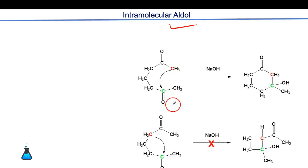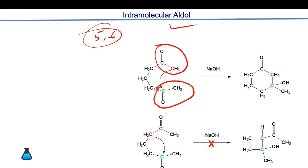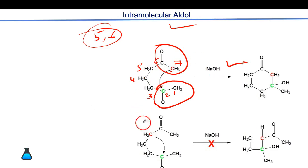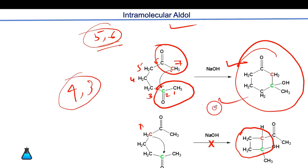In intramolecular aldol condensation, we generally prefer formation of five- or six-membered rings, and the molecule contains two carbonyl groups within the same chain. For example, in a seven-carbon diketone, if the seventh carbon carbanion attacks the second carbon, a six-membered ring forms. If the fifth carbon attacks, a four-membered ring forms. Since six-membered rings are more stable, this will be the major product.